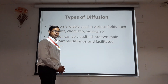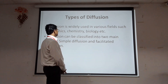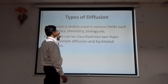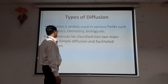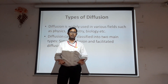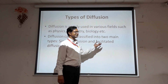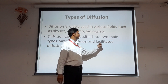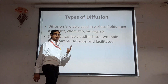There are two types of diffusion. Diffusion is widely used in various fields such as physics, chemistry, and biology. It can be classified into two main types: simple diffusion and facilitated diffusion. In simple diffusion no assistance is required, while in facilitated diffusion some facilitation or assistance is required.